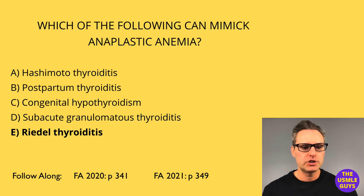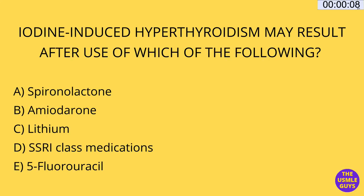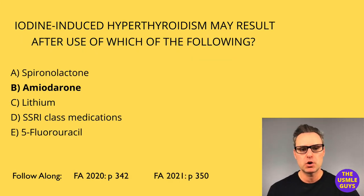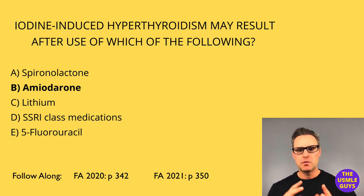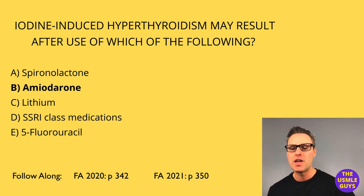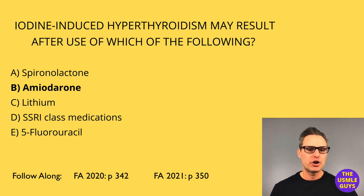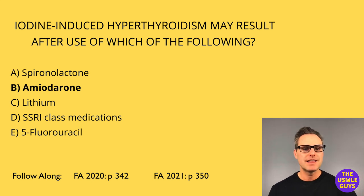Let's move on to our next question — go ahead and pause, and come on back when you think you've got the right answer. The correct answer here is B, amiodarone. This is a phenomenon known as the Jod-Basedow phenomenon, where a patient who is iodine deficient but has partial autonomous thyroid tissue is then made iodine replete. This can occur with amiodarone use or after iodine IV contrast administration. That's where we'll end this lecture — we'll see you on the next one.